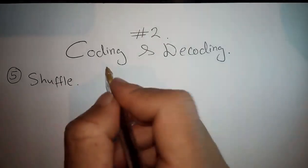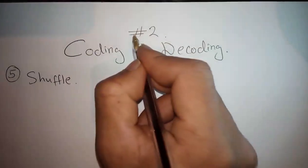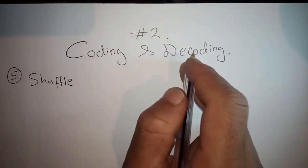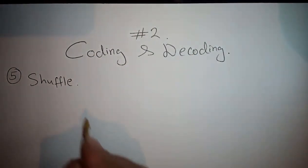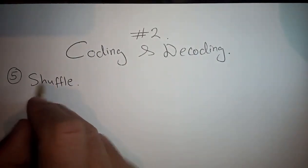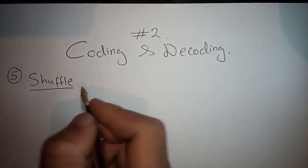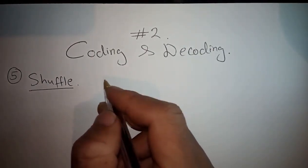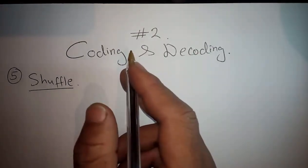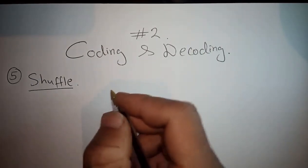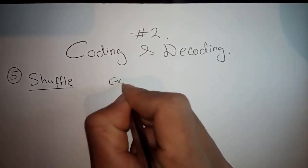Welcome back to dspace channel. In today's lesson, lesson number two, we'll continue with our coding and decoding. Last time we covered four types, now we'll discuss the important fifth one, which is shuffle. This is an important and common type you should know.